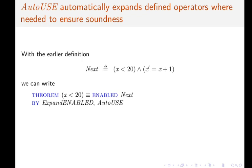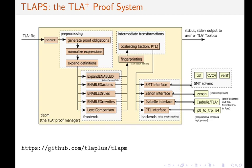This proof directive tells the prover to look for operators within the scope of ENABLED that might contain prime variables. And that if it finds any such operators, it replaces them with their definitions. This can reduce the amount of user interaction that's necessary.